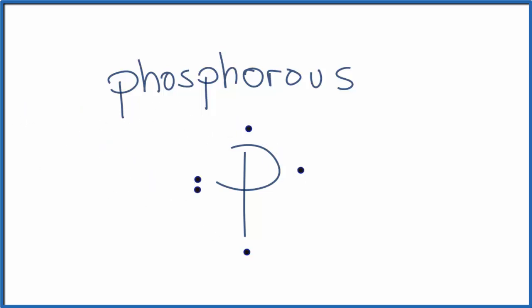That would be the Lewis structure for phosphorus, the neutral element. But we're interested in P³⁻, the phosphide ion. We'll put our 3⁻ back up here and change the name to phosphide. Because we have the minus three charge, and electrons are negative, this means we have three extra electrons.